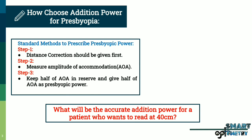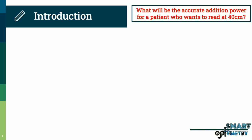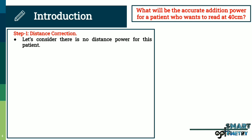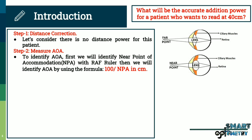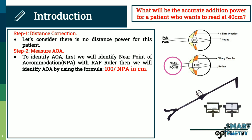Let's take the same example. What will be the accurate addition power for a patient who wants to read at 40 cm? Step 1 — distance correction: to keep our video short, let's consider there is no distance power for this patient. Step 2 — measure amplitude of accommodation. To identify amplitude of accommodation, first we will identify the near point of accommodation by using the formula: 100 divided by near point of accommodation in cm.